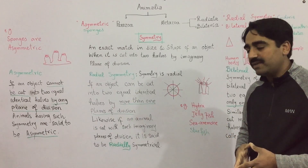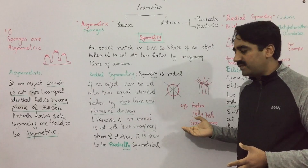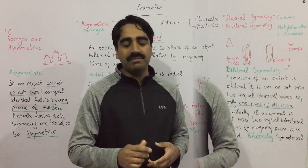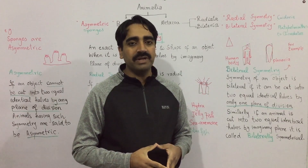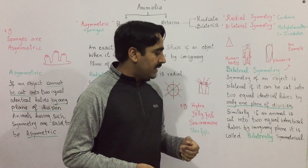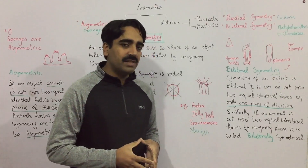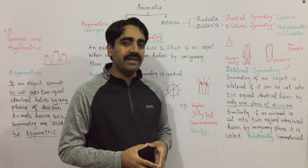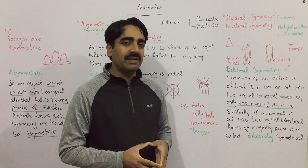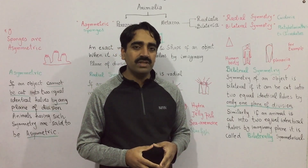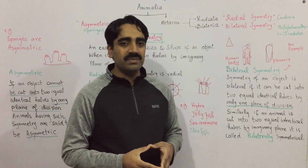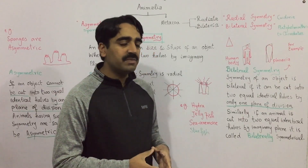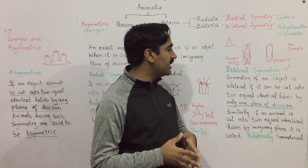Jellyfish can be cut in the same way. These first three groups — hydra, jellyfish, and sea moon — belong to the group cnidarians. The cnidarians are placed in the grade Radiata. However, there are exceptions: some animals have radial symmetry but are not placed in grade Radiata. For example, the starfish belongs to the echinoderms, and echinoderms also have radial symmetry.